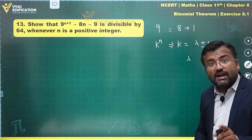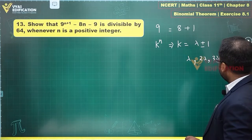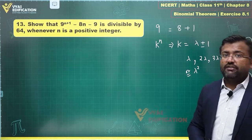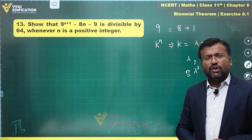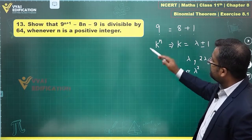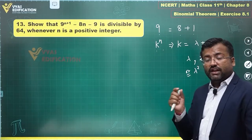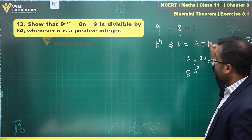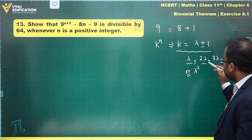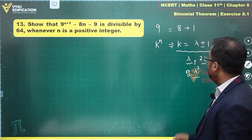In general, whenever you have k^n, k has to be written as lambda plus or minus 1, where either lambda is the divisor, or 2*lambda, 3*lambda, lambda squared, or lambda cubed are divisors. In the case of 9, we write it as 8 plus 1, and for k in general as lambda ± 1, so that the expression can be simplified when the divisor is 8 squared, which is 64.